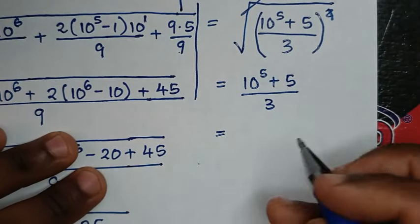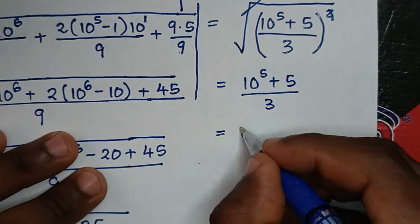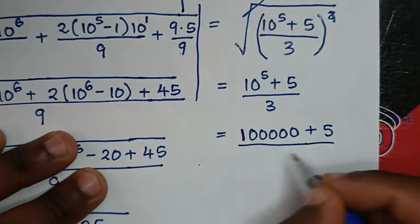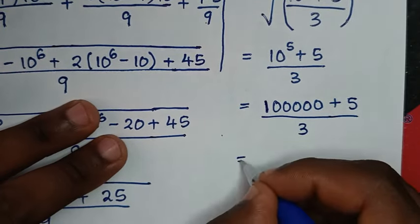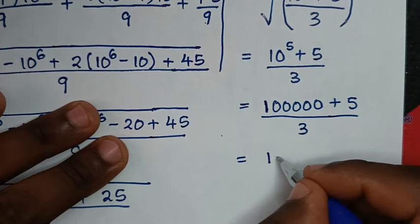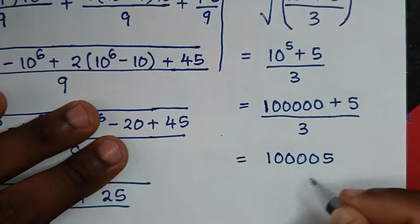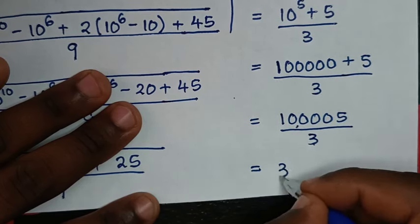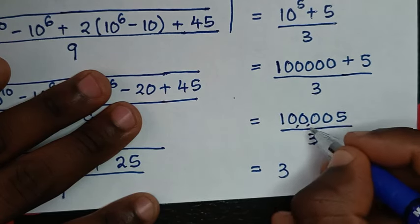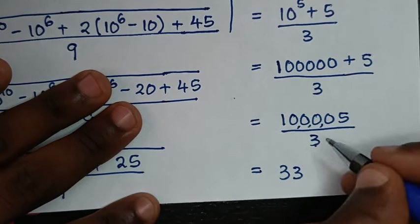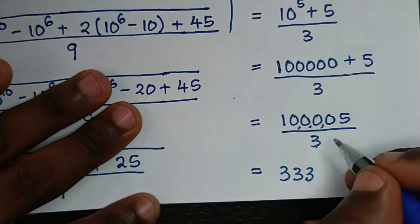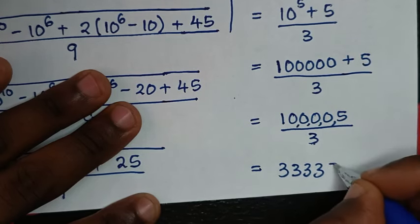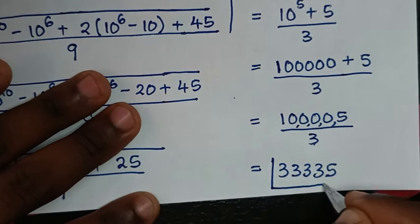So it will be equal to this plus this, it is 100005 divided by 3. So it will be equal to: 10 divided by 3 is 3 we are left with 1, so it will be 10 divided by 3 is 3 we are left with 1, so it will be 10 divided by 3 is 3, by 9 we are left with 1, so it will be 10 divided by 3 is 3 we are left with 1, so it will be 15 divided by 3 is 5. So this is our final answer: 33335.